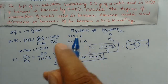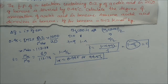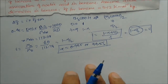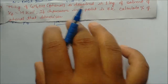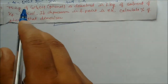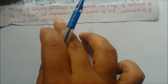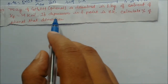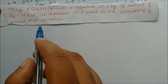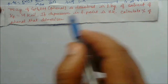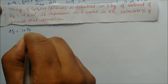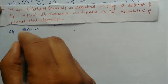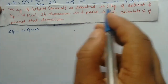If the solvent is known, we find observed molar mass and then i. If solvent is not given, we use i directly. Next problem: 75.2 grams of phenol dissolved in 1 kilogram of solvent, Kf = 14 K·kg/mol, depression in freezing point is 7 K. Calculate the percent of phenol that dimerizes. Since solvent is not specified, we use delta Tf = i × Kf × m directly.